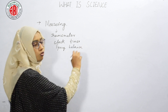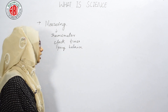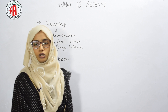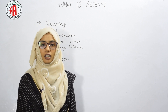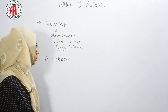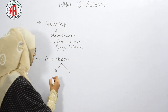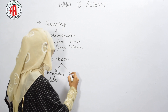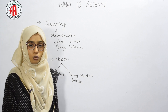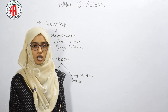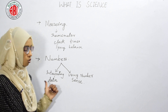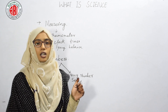Next is numbering — how scientists use numbers to show the results of their investigation. Using numbers can be divided into two ways: interpreting data and using number sense. In interpreting data, scientists choose a way to display their data and results after investigation so it can be interpreted by others easily, usually using tables, charts, and graphs.